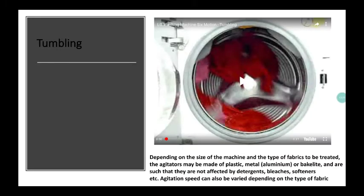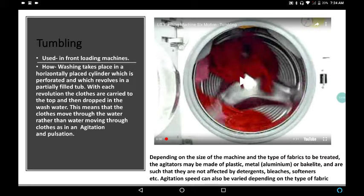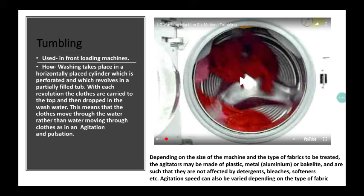Next is tumbling. What is tumbling? It is used in front loading machine. Washing takes place in a horizontally placed cylinder which is perforated and which rotates in the partially filled tub. With each revolution, the clothes are carried to the top and then dropped in the wash water. This means that the clothes move through the water rather than water moving through the clothes as in agitation or pulsation. This is the difference.